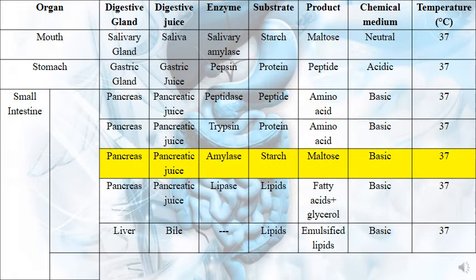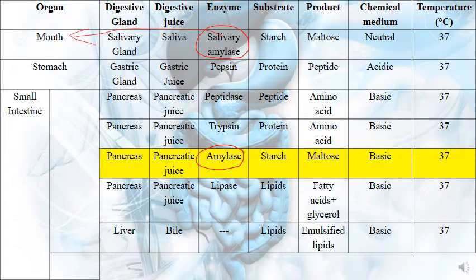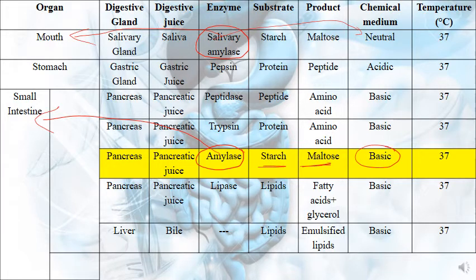The pancreas also has a pancreatic juice that contains an enzyme called amylase — but wait, this is a different amylase from the salivary amylase. Salivary amylase works inside the mouth in a neutral medium, while this pancreatic amylase works at the level of the small intestine in a basic medium. Both work on starch to give maltose, but the medium differs. Temperature is always 37 degrees Celsius.